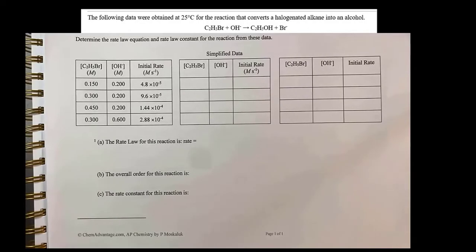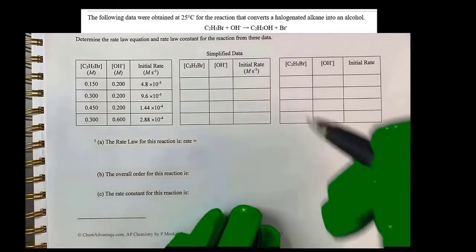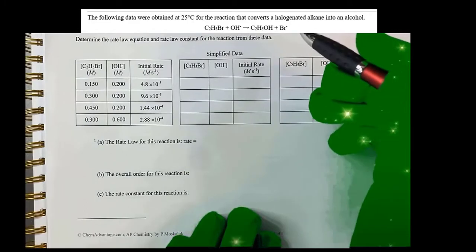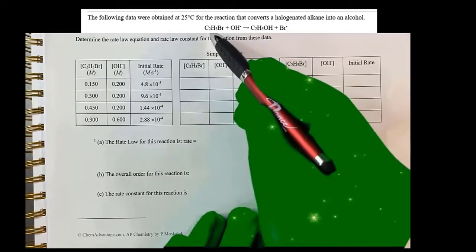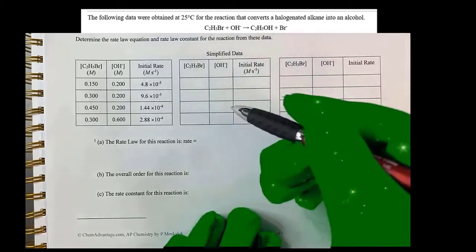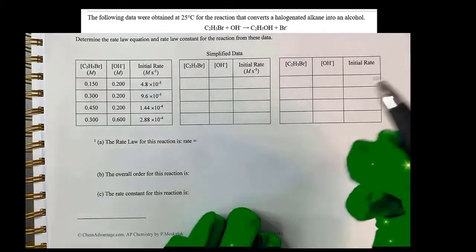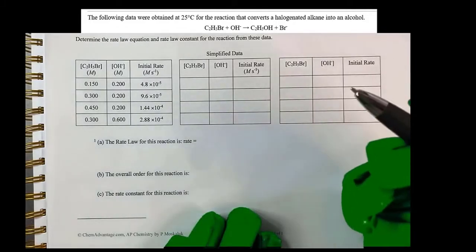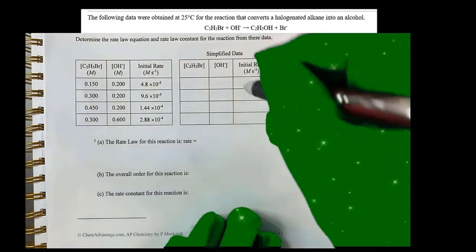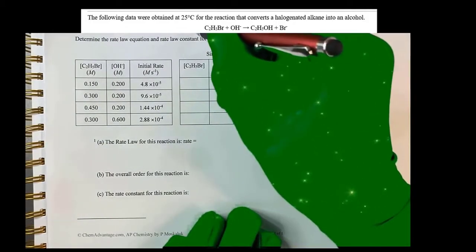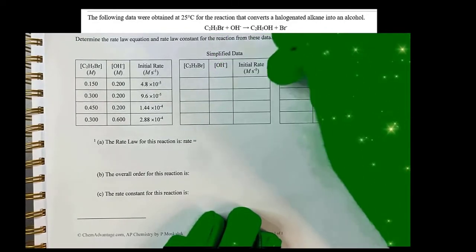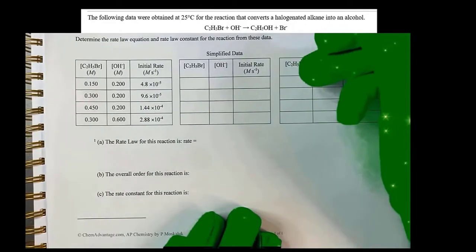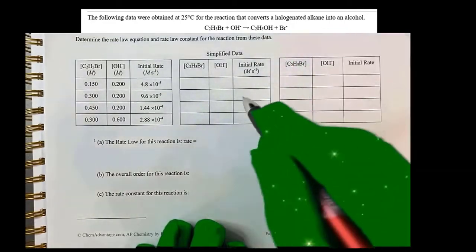Here we've got a reaction rate problem with simple one-to-one stoichiometry, where bromoethane (C2H5Br) reacts with hydroxide ions one-to-one to make ethanol and bromide ion. So there's the reaction. We don't have to worry about stoichiometry because it's one-to-one.